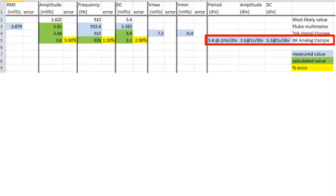The direct measurements for the analog oscilloscope are all in divisions: the period, amplitude, and DC offset.